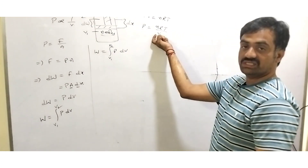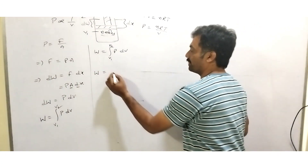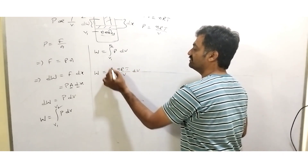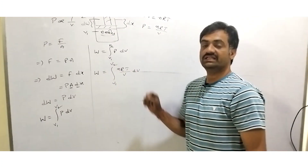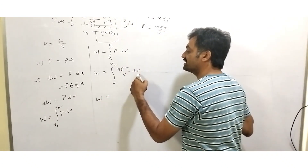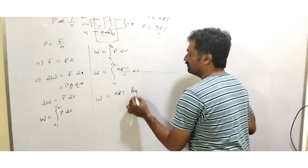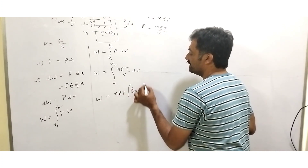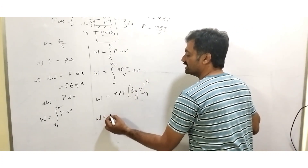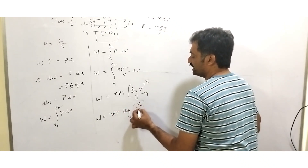Substituting P equals nRT by V in the work done equation, W equals integration of nRT by V into dV within limits V1 to V2. Since n, R, and T are constants, using the standard result that integration of 1/x dx equals log x, we get W equals nRT into log V evaluated from V1 to V2. When we substitute the limits, work done is W equals nRT into log(V2/V1). This is the expression for work done in the case of an isothermal process.